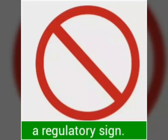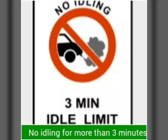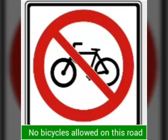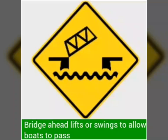A regulatory sign: no idling for more than 3 minutes. No bicycles allowed on this road. The road is separated by a median ahead — keep to the right.